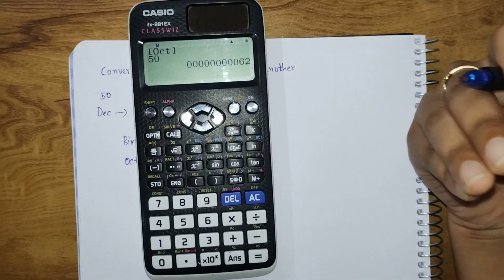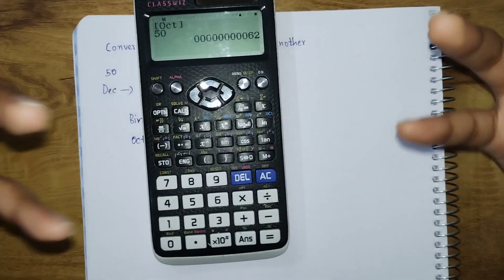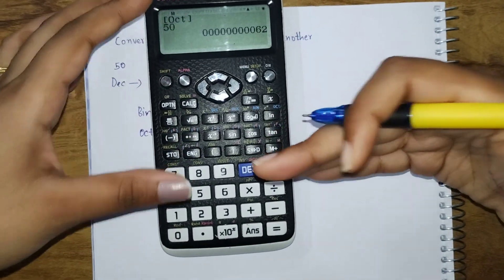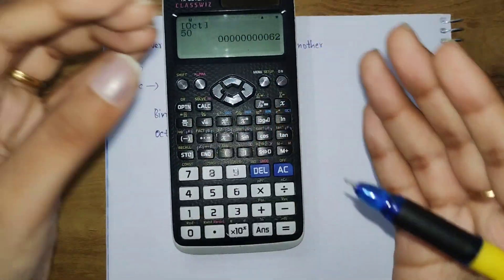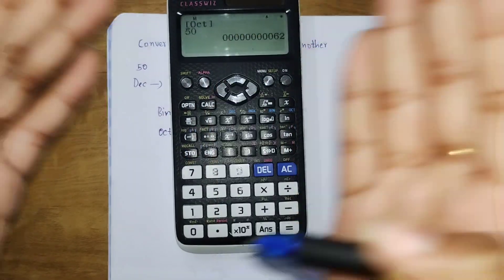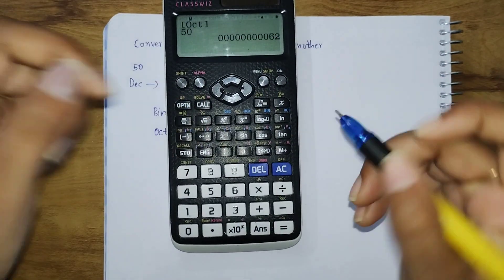You can change the forms here and convert these forms to other forms, like hexadecimal to octal or hexadecimal to binary, all the forms, just by accessing these four options: decimal, hexadecimal, binary, and octal.